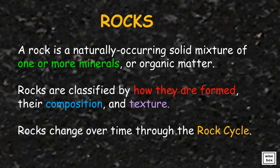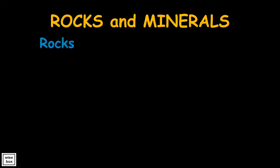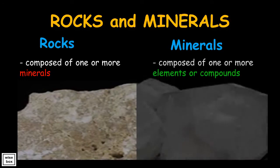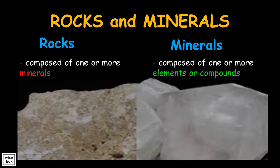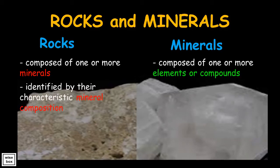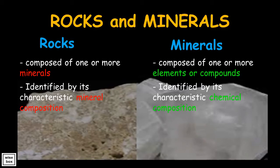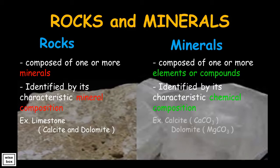Rocks change over time through the rock cycle. Rocks are different from minerals: rocks are composed of one or more minerals, while minerals are composed of one or more elements or compounds. Rocks are identified by their characteristic mineral composition, while minerals are identified by their characteristic chemical composition. Limestone is a rock made of the minerals calcite and dolomite. The mineral calcite is composed of calcium carbonate, while the mineral dolomite is composed of magnesium carbonate.